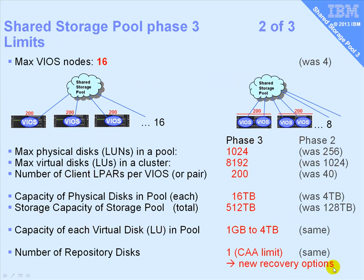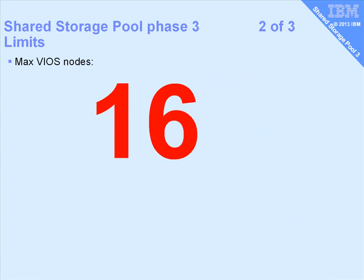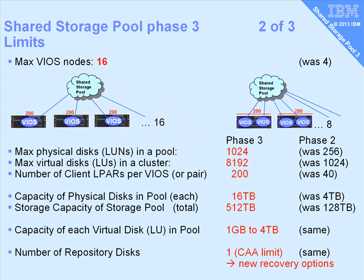Let's look at the increased limits with this release. The first number I want to highlight is that the maximum number of VIO servers is 16 — that's a proper size cluster. Note that if you're using dual VIO servers, that's really down to 8 different machines, but again that's a proper size cluster. That's the sort of cluster where all the logical partitions in those 8 machines will be using the shared storage pool and can then use live partition mobility across that cluster.